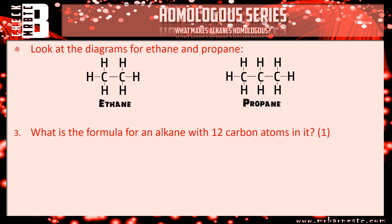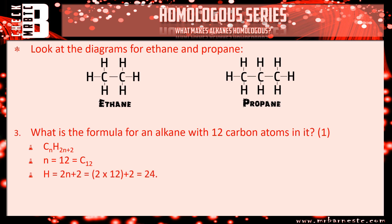Question three: what is the formula for an alkane with 12 carbon atoms? The formula is CnH2n+2. With n equal to 12, I've got C12. To work out the hydrogens, I multiply 12 by 2, which gives 24, then add 2, giving 26. So the overall formula is C12H26. Just one mark for that answer.